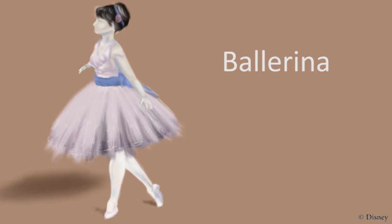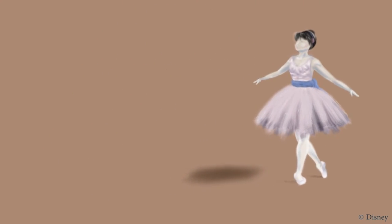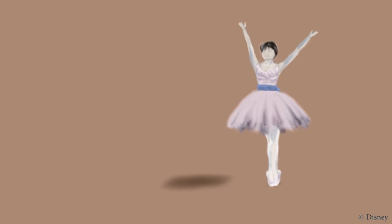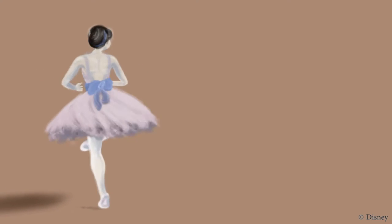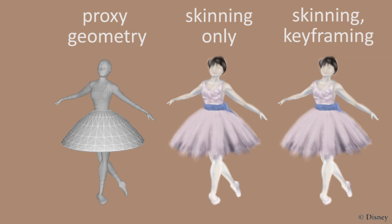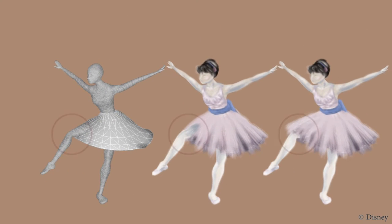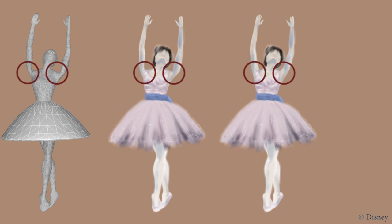Here's an example painted in a more classic style over a motion-captured animation. For this sequence, configuration space keyframing was used to fix the leg penetrating the skirt and skinning artifacts in the proxy geometry at the shoulders. Temporal keyframing was used to create the skirt twirl effect.